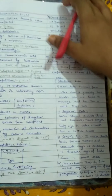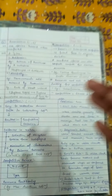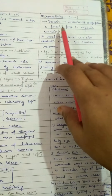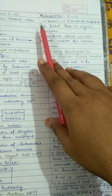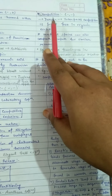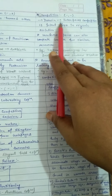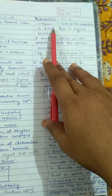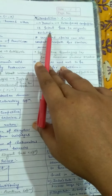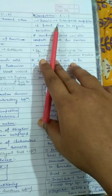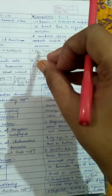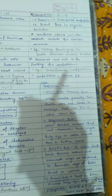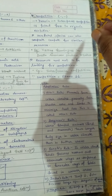We know that competition is a negative-negative interaction in which both species are harmed. Darwin gave a very important concept: he said that inter-species competition is a potent force in organic evolution, meaning that competition between different species is a very strong force driving organic evolution.